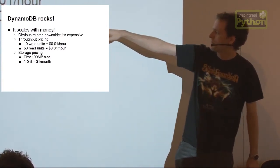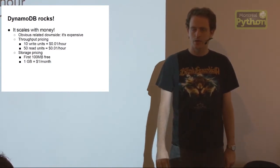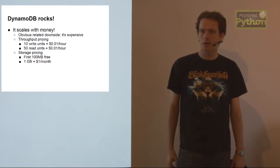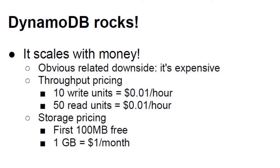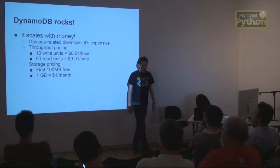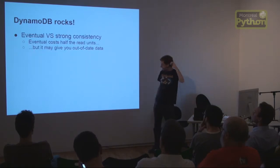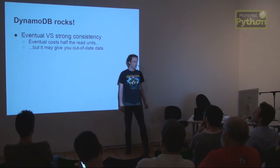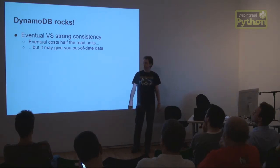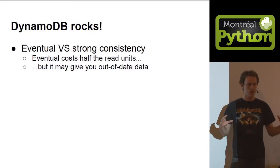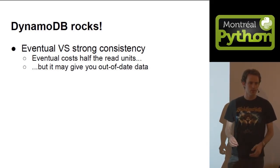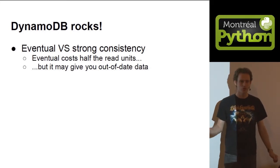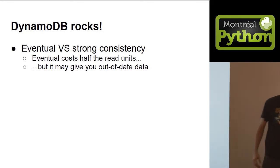Storage costs: the first hundred megabytes per table are free, and above that it's one dollar per month per gigabyte. DynamoDB is also an eventual consistency-based key-value store, which means you can use fewer read units if you're willing to accept data that may be a few seconds out of date. Just omit the strong consistency flag and you get double the performance, but slightly old data.